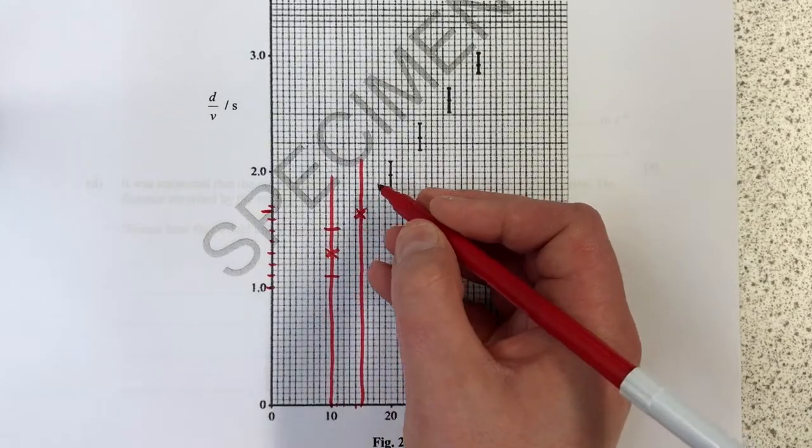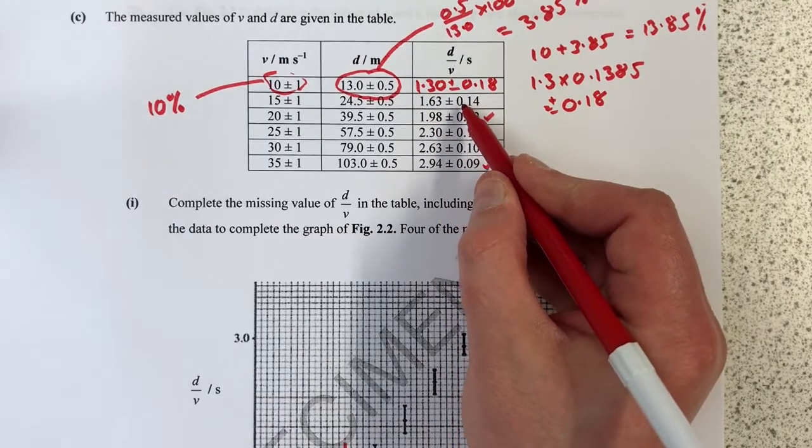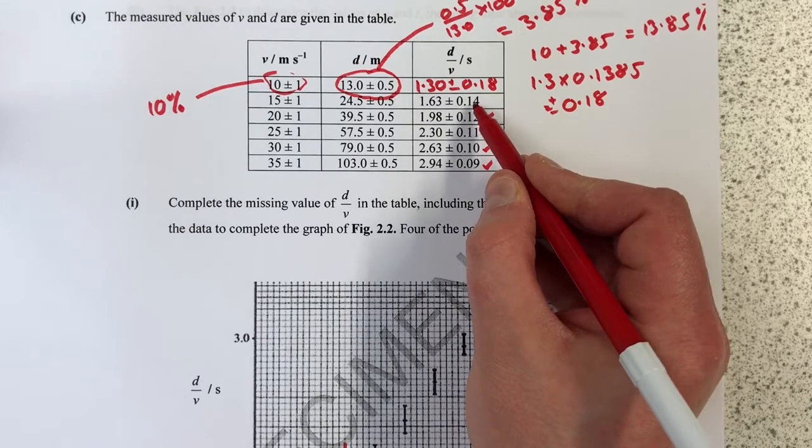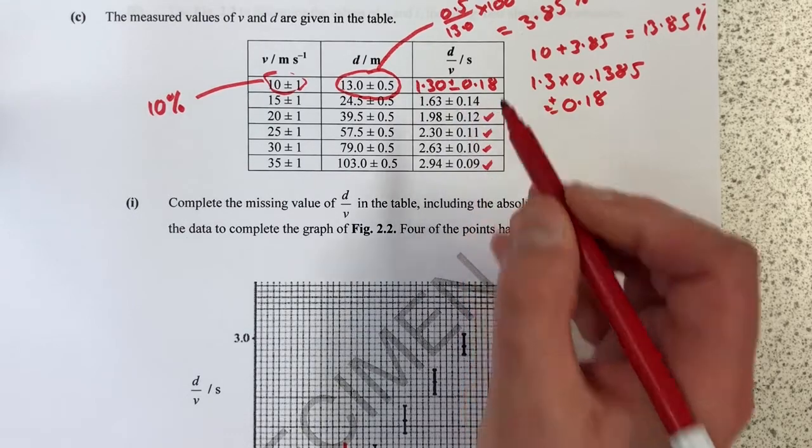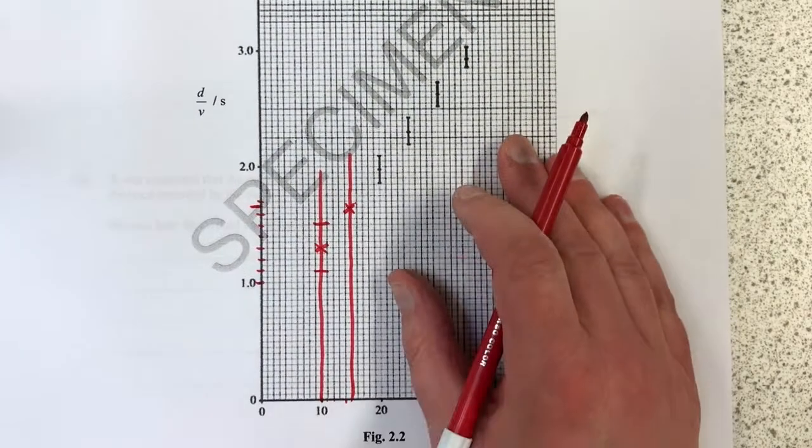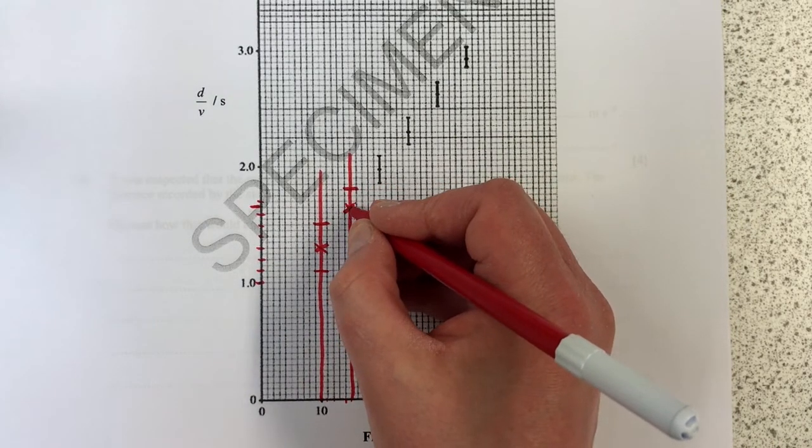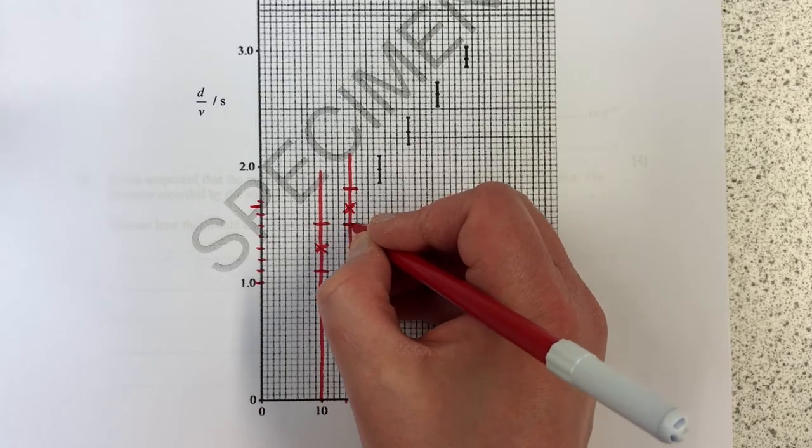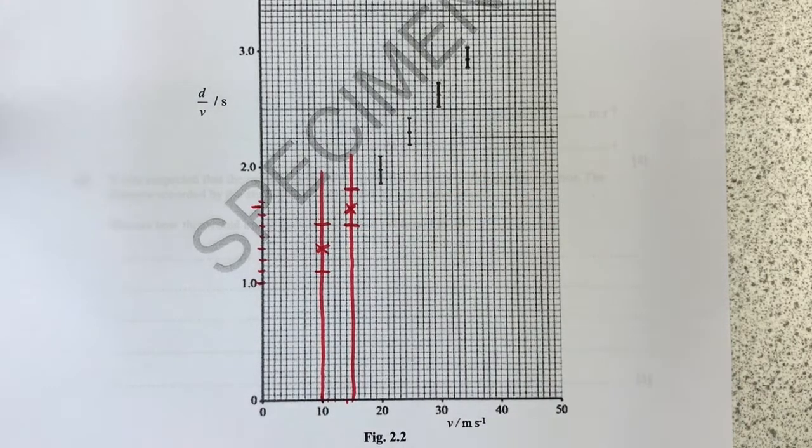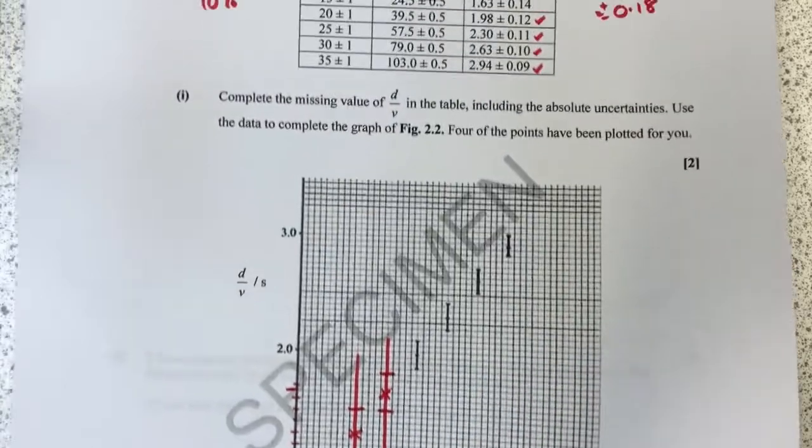So that's where I'm going to draw my cross, and then I need to do a plus or minus 0.14. That's going to have to round up to 0.15, which is going to be plus or minus 3 little squares on the graph.